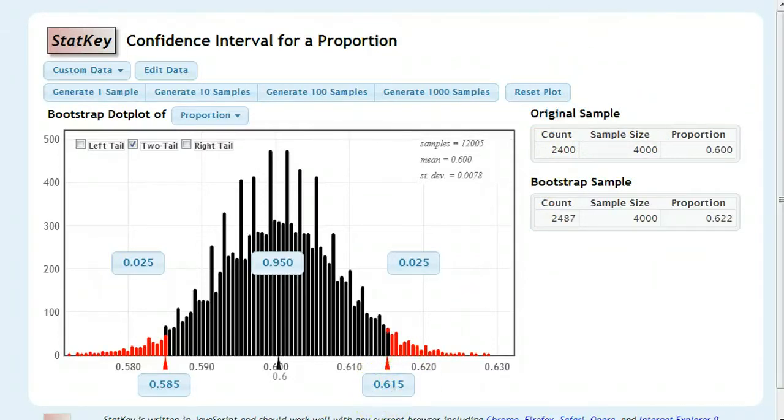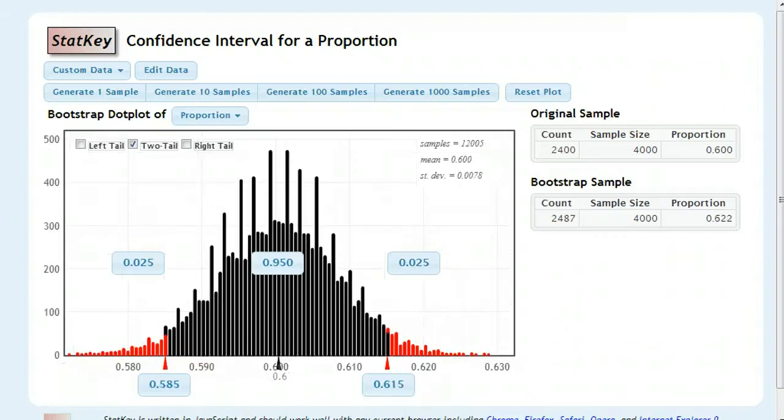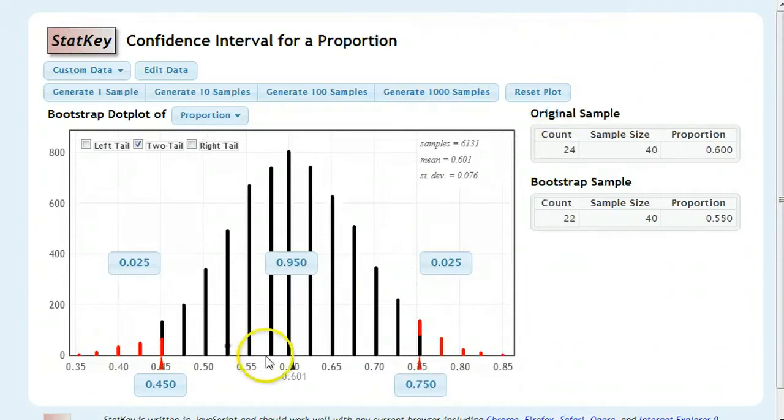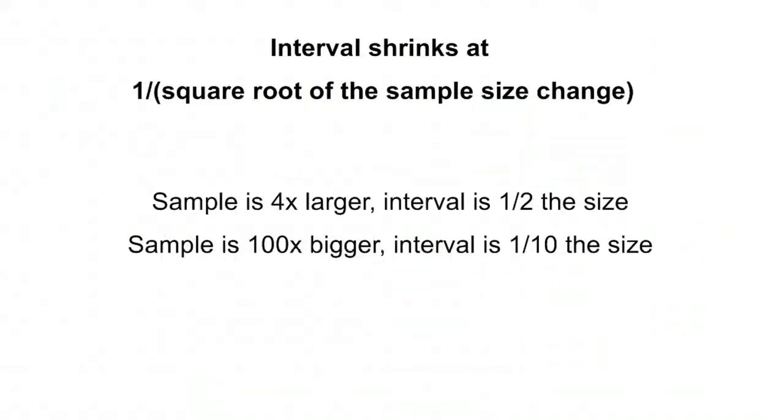And the interesting pattern here, we said 15% either way, down to 1.5% either way. It dropped by a tenth when we multiplied our sample size by 100. And here, we cut the interval in half when we multiplied the sample by 4. The pattern, in fact, is that the interval is shrinking at 1 over the square root of the sample size.